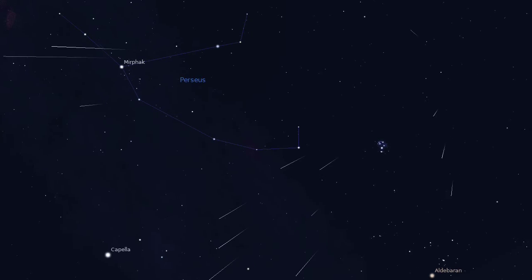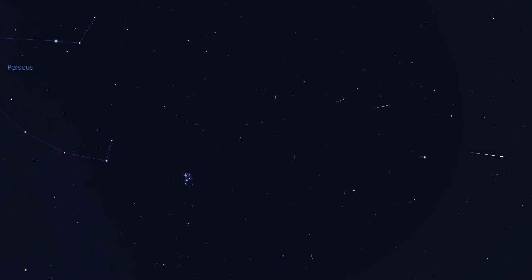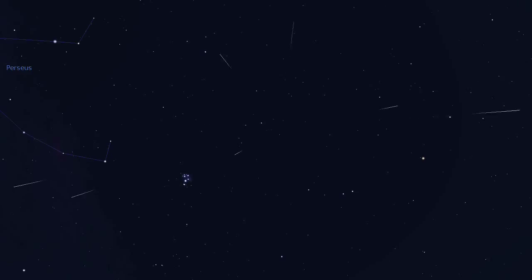Sometimes, at specific times throughout the year, the Earth passes through the path of a comet which has left behind a trail of debris as it orbits the Sun. When this happens, we're treated to a meteor shower. During a meteor shower, you may see dozens or even hundreds of meteors per hour.